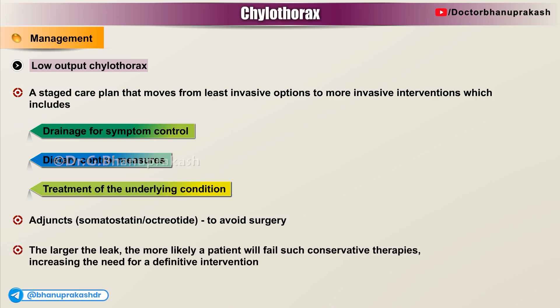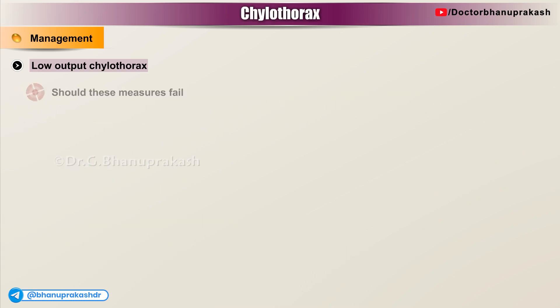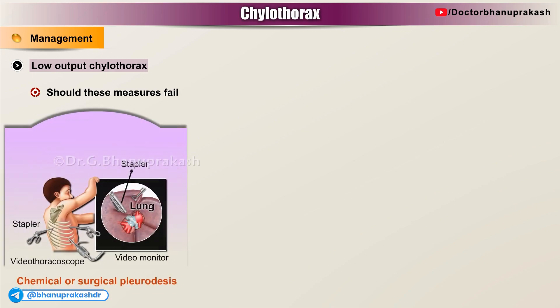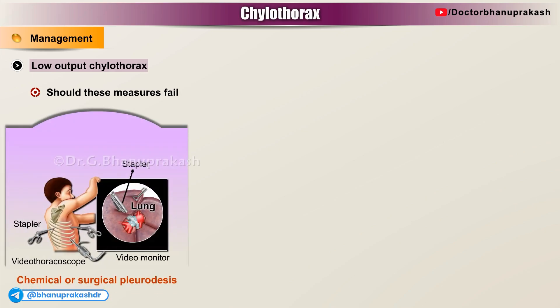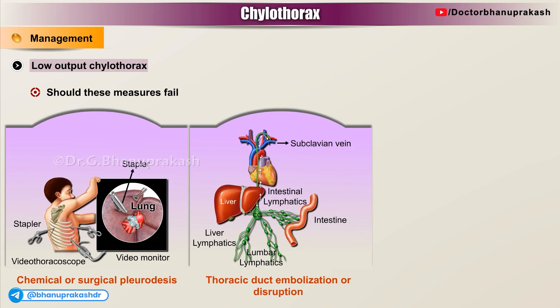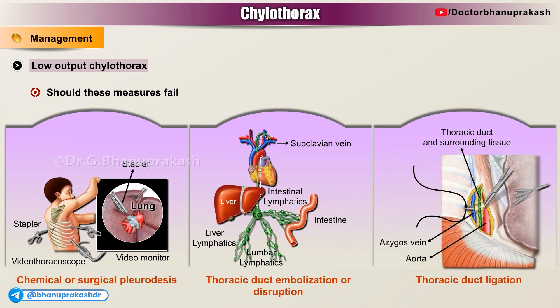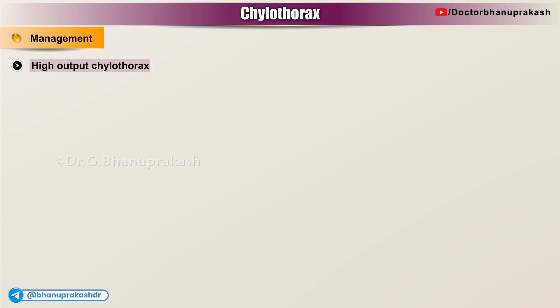As a general rule of thumb, the larger the leak, the more likely a patient will fail conservative therapies, increasing the need for a definitive intervention. Should these measures fail, then chemical or surgical pleurodesis, thoracic duct embolization or disruption, thoracic duct ligation, or some combination thereof is considered.